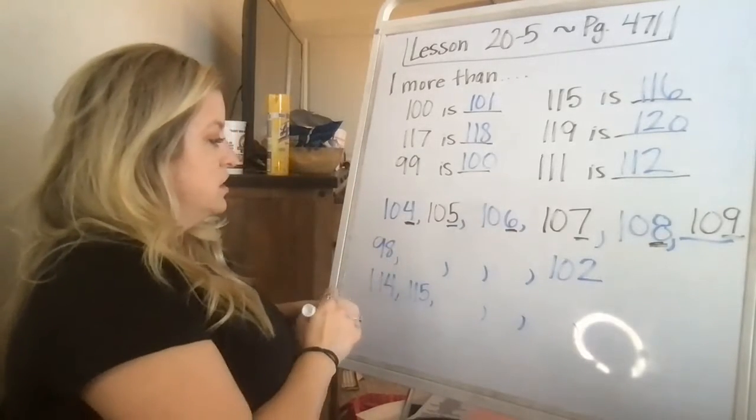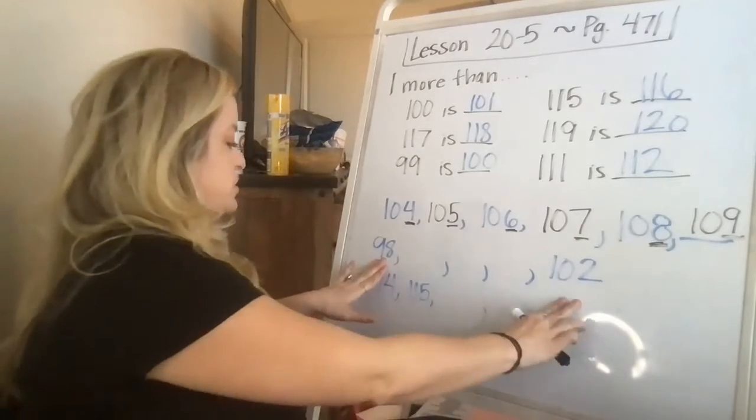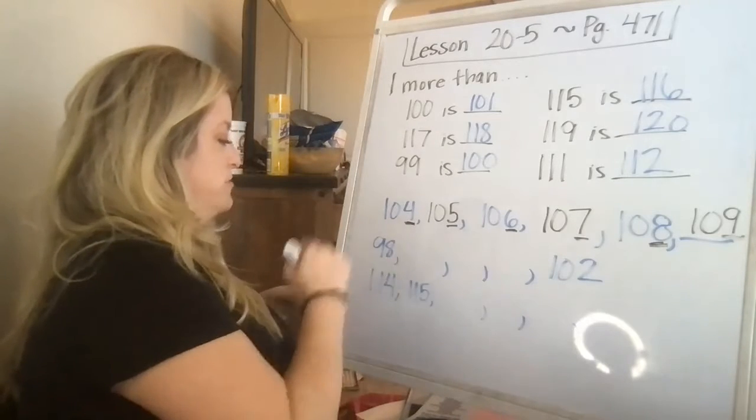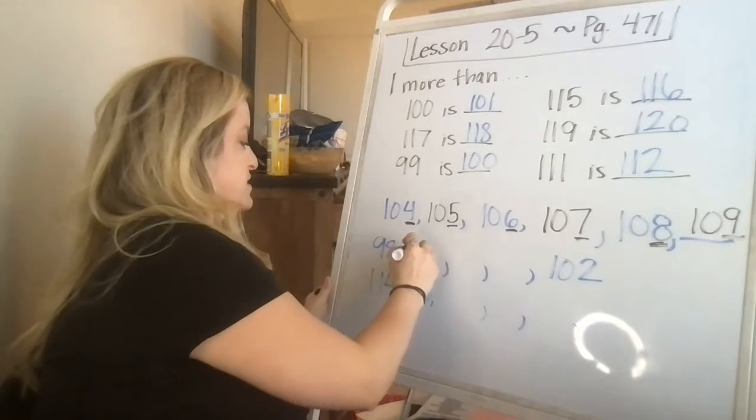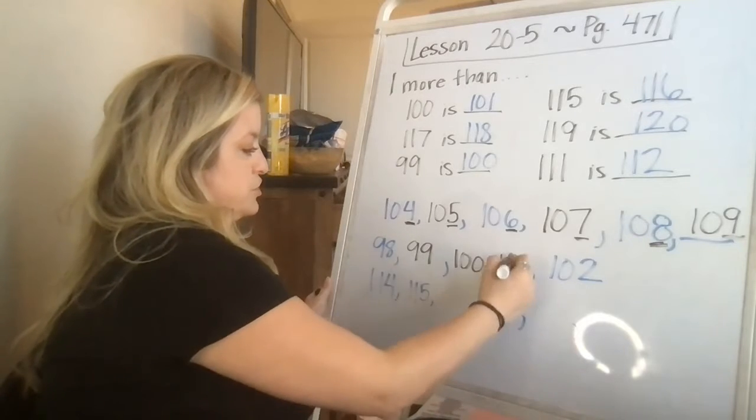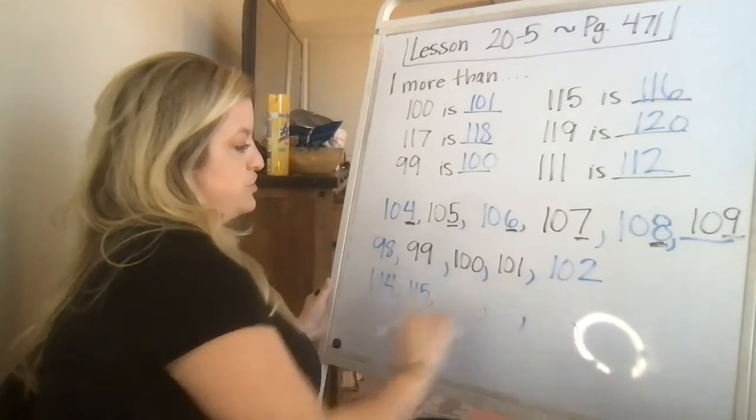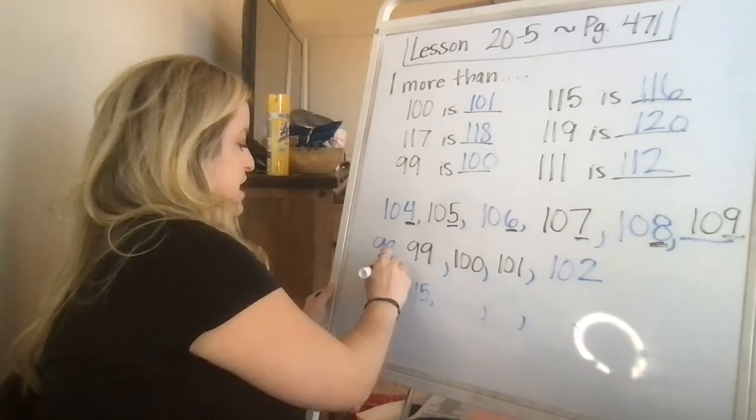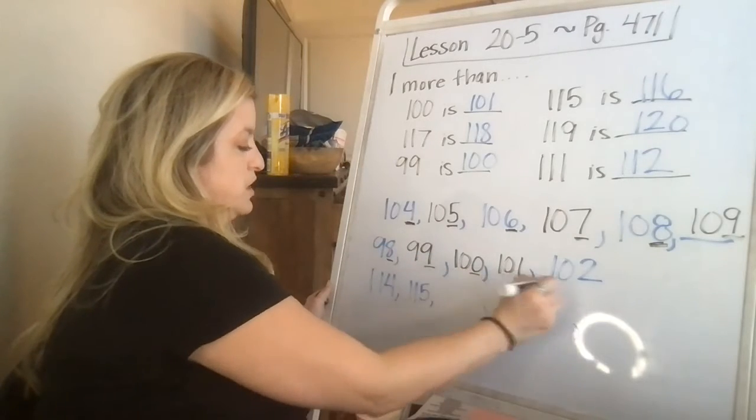Now down here, we're going to go from the 90s up to the low 100s. So it says 98, 99, 100, 101, 102. And again, we're just repeating 8, 9, 0, 1, 2.